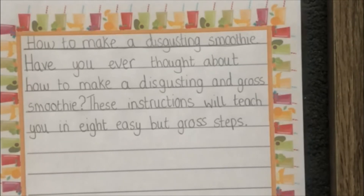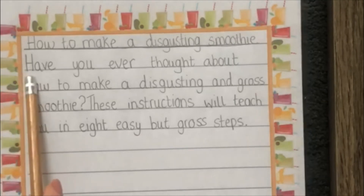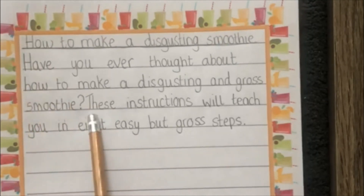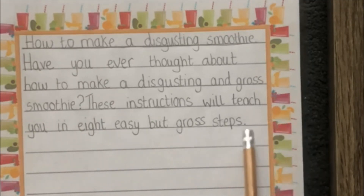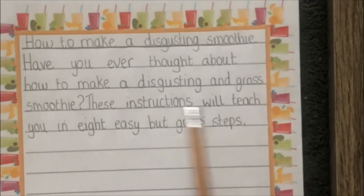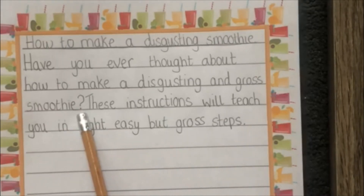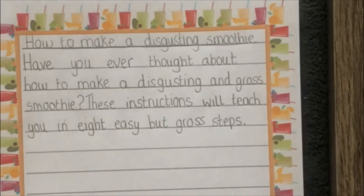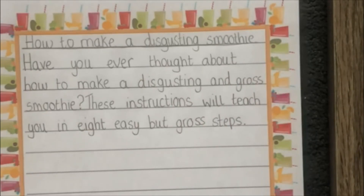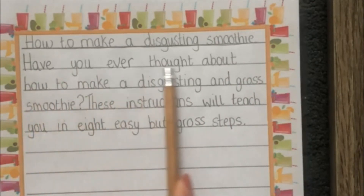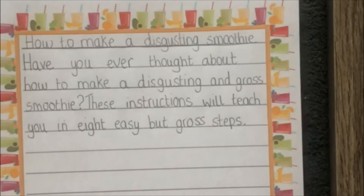Looking at my writing checklist, I'm going to go through my work. Do I have capital letters? Yes, I have a capital letter at the start of my first sentence and another capital letter for my next sentence. Do I have full stops? Yes, I have a full stop for my second sentence and a question mark for my first sentence, which is my hook. Do I have finger spaces? Yes, I can see finger spaces between each of my words. Have I written on the line? Yes, and notice none of my letters go over onto the next line.